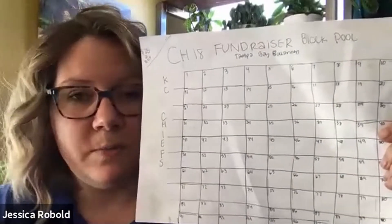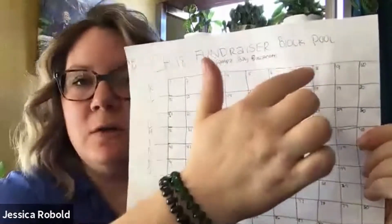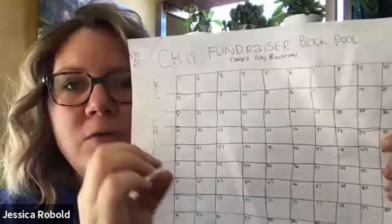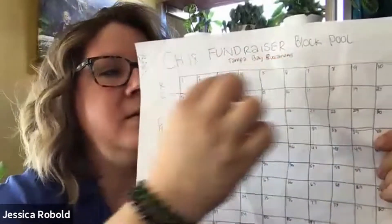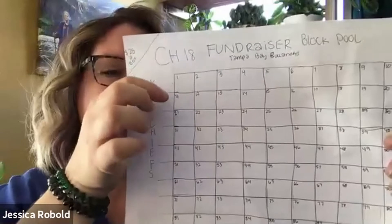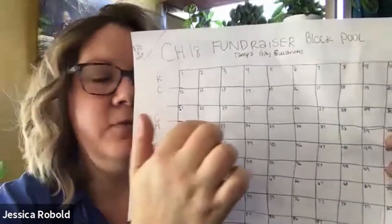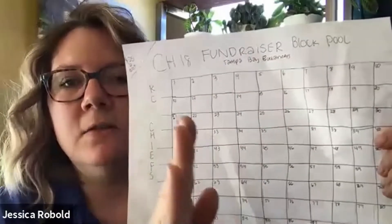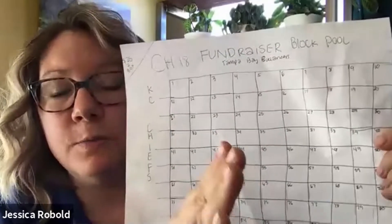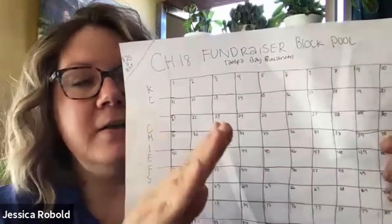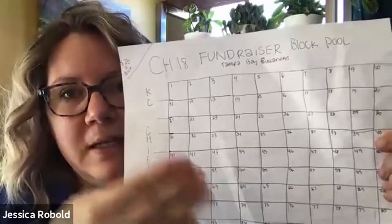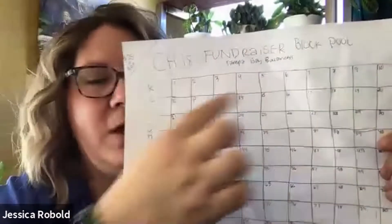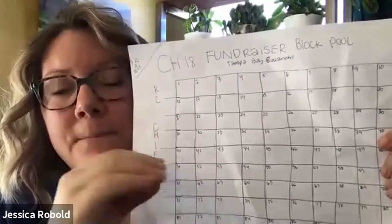At the end of quarter number one, there's going to be a score. Maybe your horizontal team has 10 and your vertical team has 14. So you take the zero from the 10 score and you find column zero. You will then take your four from your vertical team and find row four. Wherever those two meet up on your board, that square wins the winnings for quarter one. The other side of that is reversing those two numbers gets another winner for quarter one — so we would take column four and row zero. Wherever those meet up, somebody else wins too, but they're going to win a little less — at least doubling their money the way we do it.